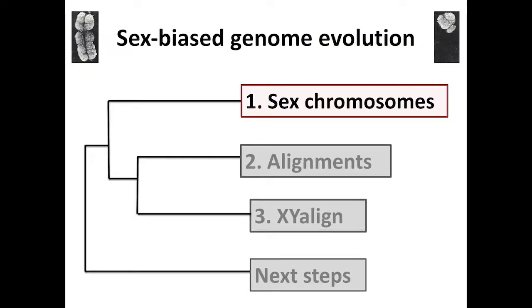So what about sex chromosomes? I want to briefly go over their evolution and why I think it's important. We've heard today about how important X and Y are in sex differences in different diseases, but how did they get there? Not all species even have genetic sex determination or chromosomal sex determination — sex can be determined by environment, hormones, or temperature.